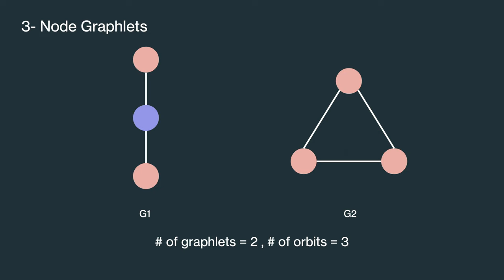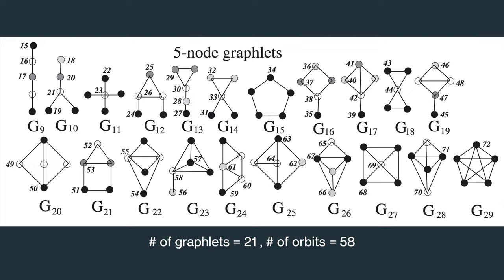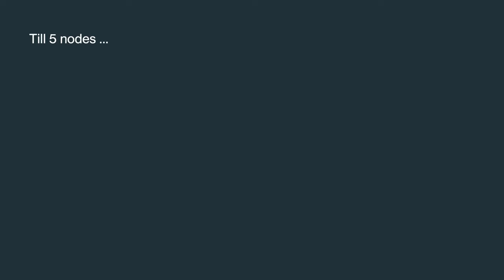For a four-node case, we have six graphlets and 11 orbits. For five-node, we have 21 graphlets and 58 orbits. Till five nodes, we have 29 graphlets and 73 graphlet orbits.